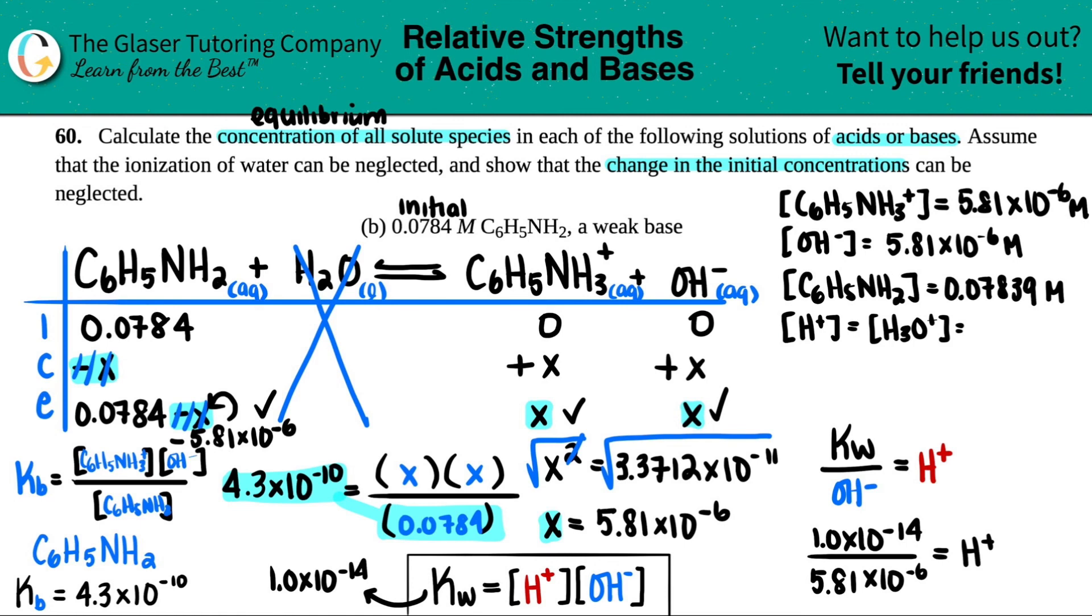So let's just plug it into calci and see what we get. So 1 times 10 to the negative 14th divided by 5.81 times 10 to the negative 6th. And I get 1.72 times 10 to the negative 9th. And that's molarity. And those are all of the answers. There's all your solutes. There's four of them.